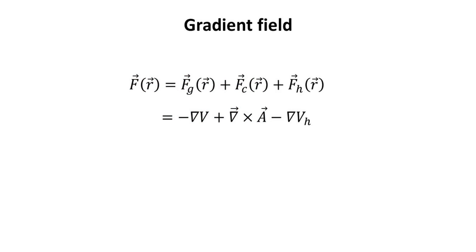We write our vector field as the sum of the gradient, curl, and harmonic fields. Each of these fields can be expressed in terms of their potentials.